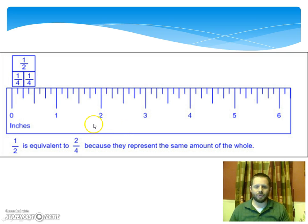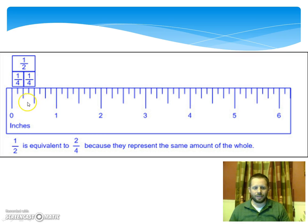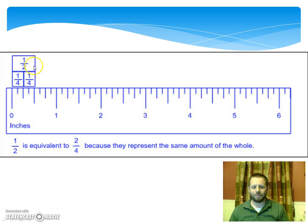Here's another representation using a ruler — the customary side in inches. If you look from zero to one on the ruler, you'll notice that this long line in the middle represents one-half. This segment can be broken up into two equal-sized pieces, and each of those pieces is worth a fourth. It takes two one-fourth pieces and then two more one-fourth pieces — so four-fourths — to equal one whole. So only two-fourths would equal one-half. They're the same amount out of the whole, so these are equivalent fractions: one-half is equivalent to two-fourths.